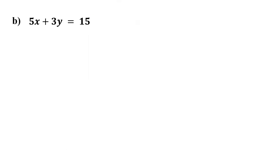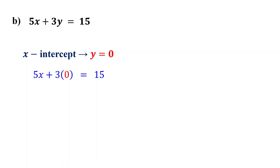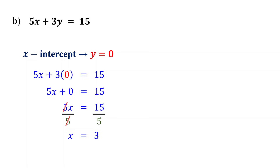Now, please pause the video and try this one. First, find the intercepts. Remember, the x-intercept occurs when y is 0. So, set y to 0 and solve for x. This simplifies to 5x equals 15. If we divide both sides by 5, we find that x equals 3. So, the x-intercept is 3 comma 0.